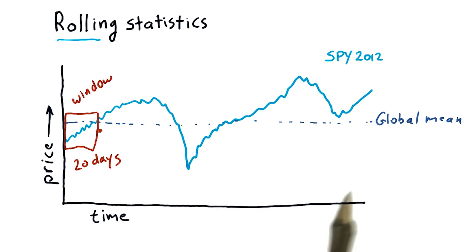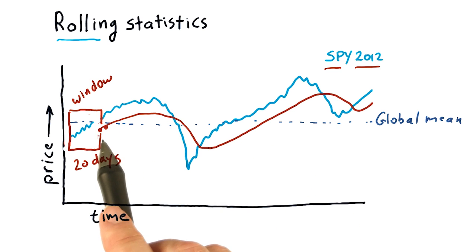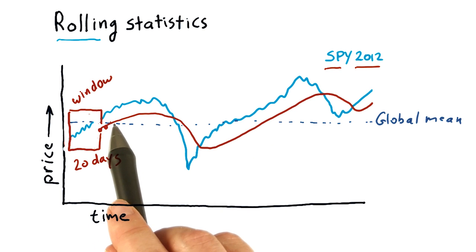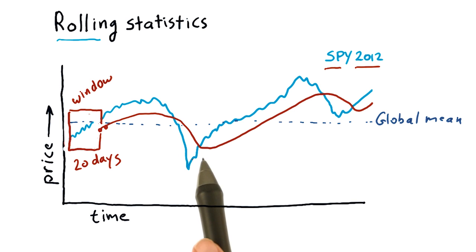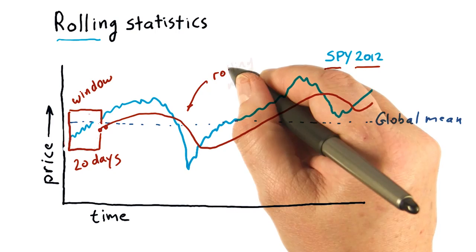We then move the window forward one day and we take another mean. You can see essentially that it's a line that follows the day-to-day values of whatever it is we're tracking, but it lags a little bit, and this is called the rolling mean.